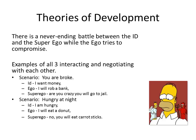Another scenario: you're hungry. Your id says 'I'm hungry.' The ego looks in the kitchen, sees a donut, and says 'I'll eat a donut.' The superego says 'no, you're going to get fat — you should eat carrot sticks.' The superego is that angel telling us what we should be doing, as opposed to the id, which is the devil just looking for food and not caring what the food is.